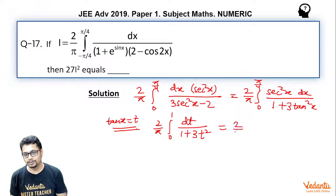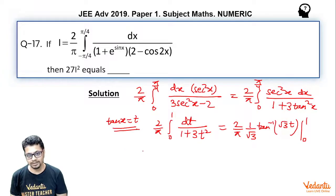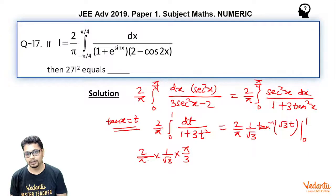So this essentially becomes 2 by π times tan⁻¹(√3·t) multiplied by 1 by √3, with limits 0 to 1. tan⁻¹(0) is 0 and tan⁻¹(√3) is π/3. So it becomes 2 by π multiplied by 1 by √3 multiplied by π/3. The π cancels, and i equals 2 divided by 3√3.